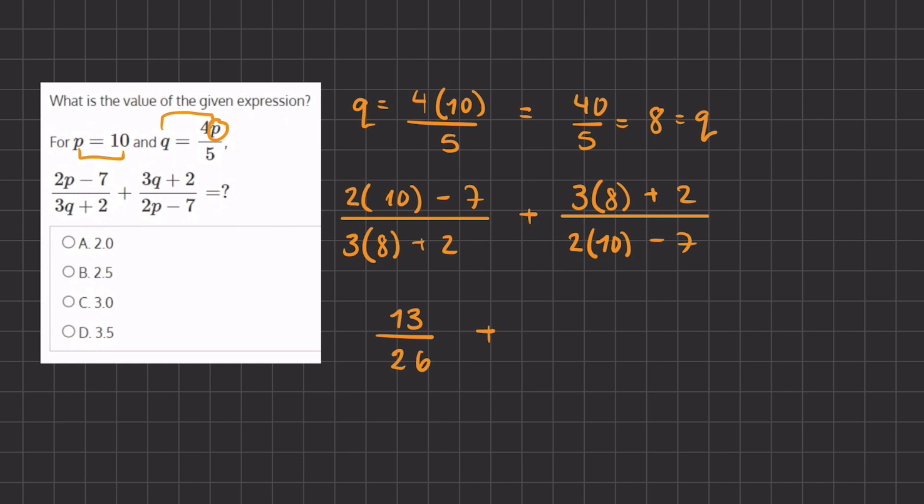All right, now in our second fraction, our numerator is going to be 3 times 8, which is 24, plus 2, which gives us 26, divided by 2 times 10, which is 20, minus 7, which gives us 13. All right, now let's simplify both of these fractions.